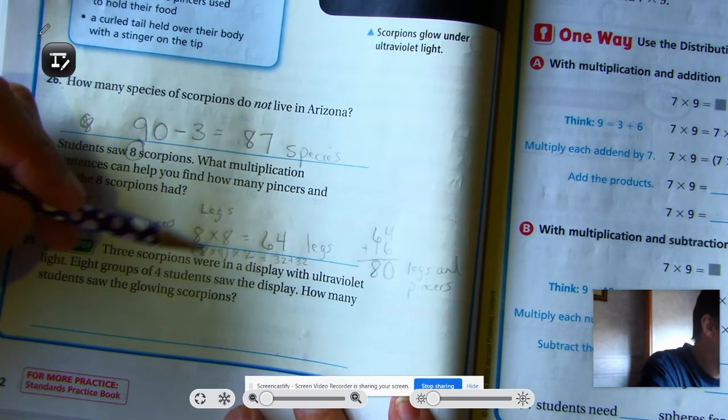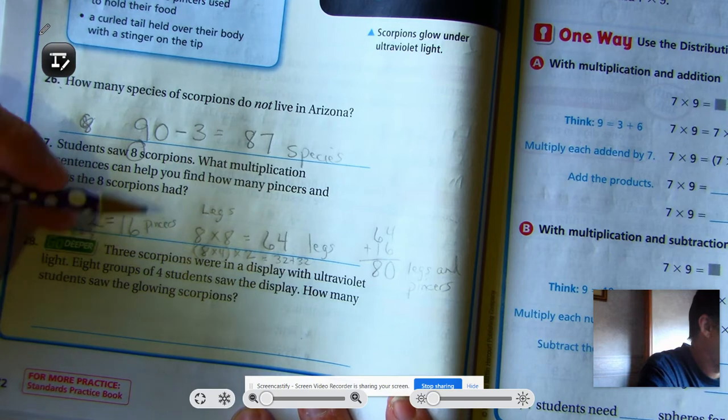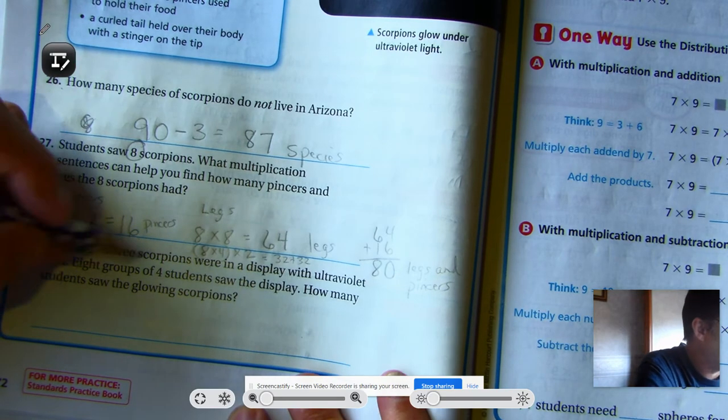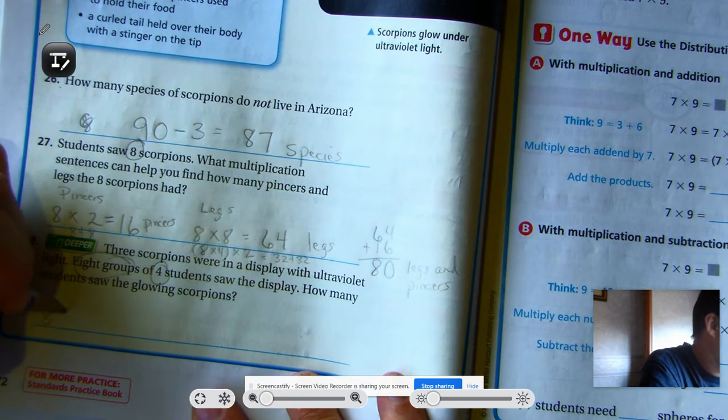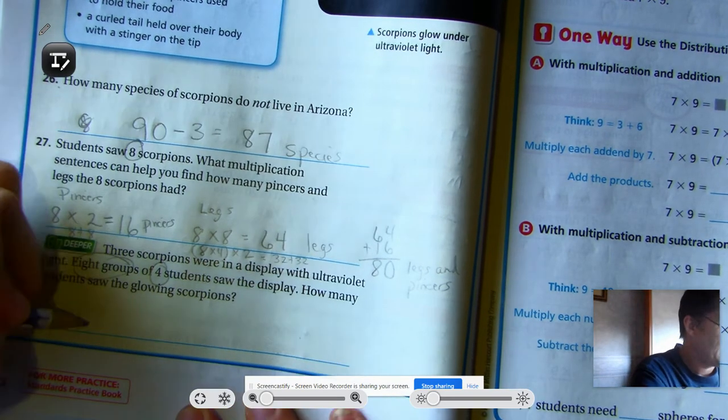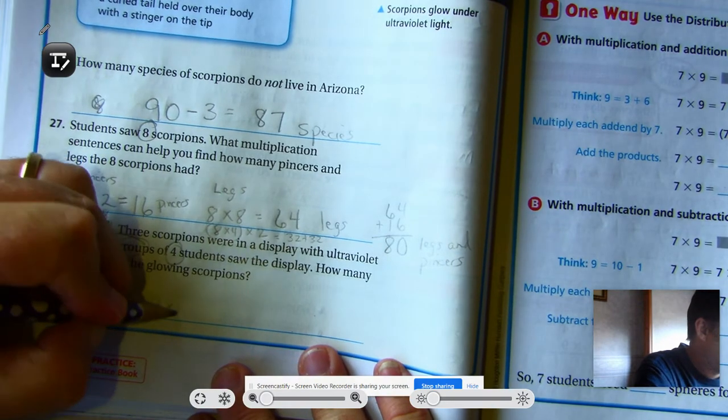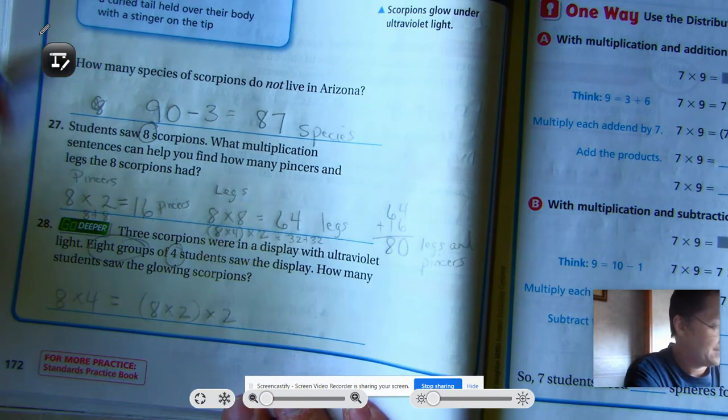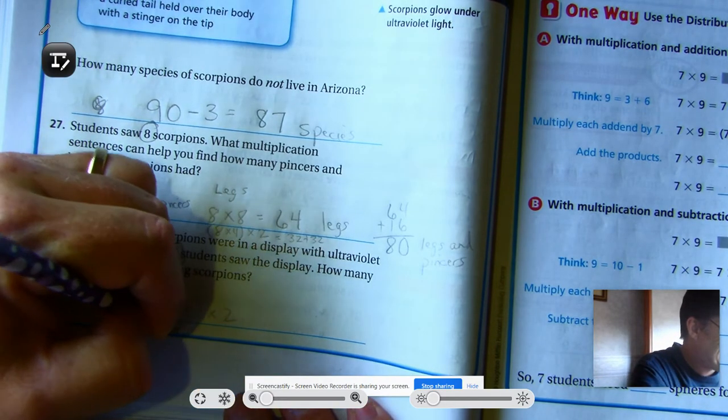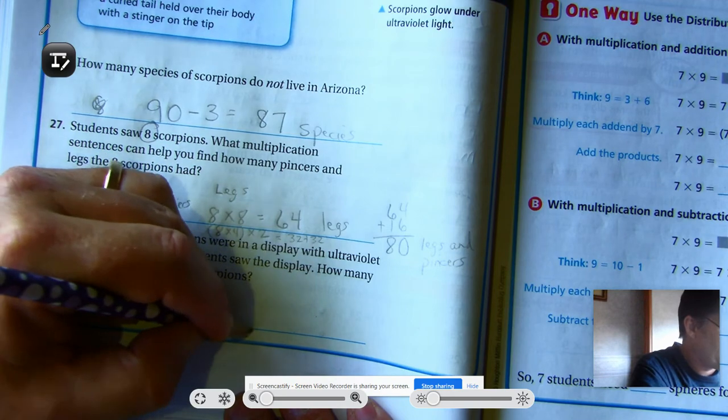Three scorpions were in display with ultraviolet light. Eight groups of four students saw the display. How many students saw the glowing scorpions? Eight groups. Each group had four. Eight times four. Eight times four is the same as eight times two, doubled. Eight times two is 16. So 16 plus 16, 32.